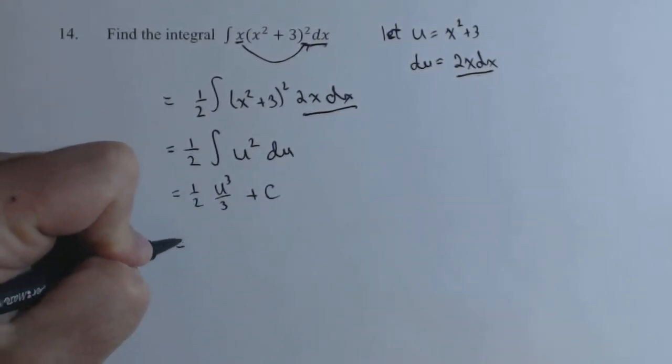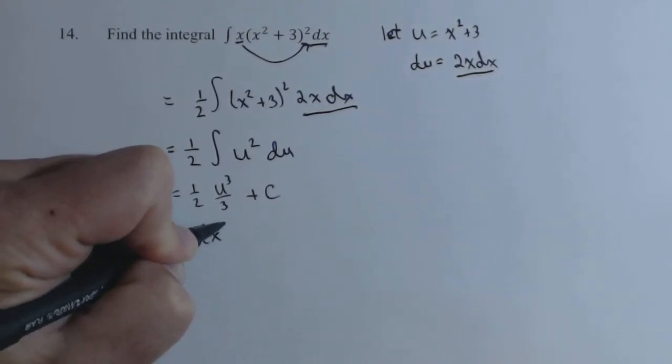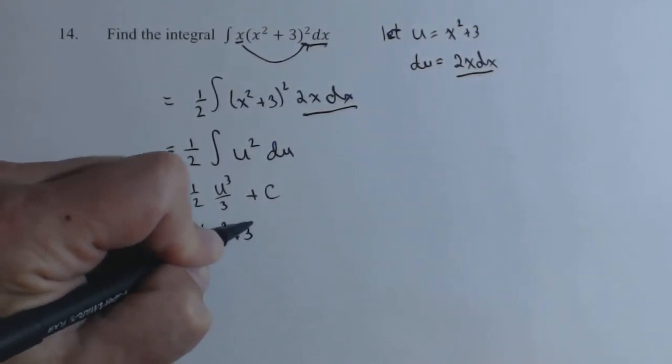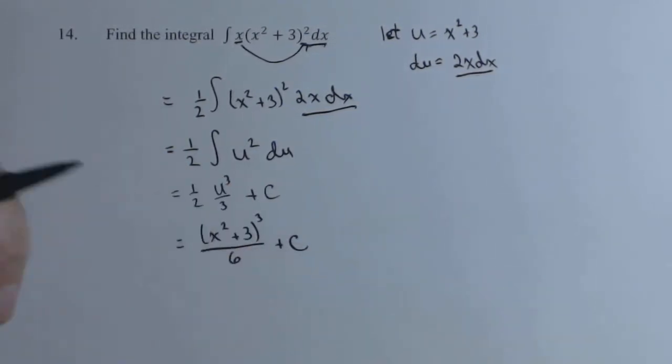We might want to change that to a six on bottom. And the u we do need to substitute back into x squared plus three. This thing started in terms of x, it better end in terms of it. And there's our antiderivative.